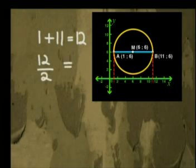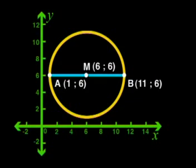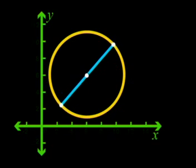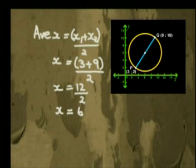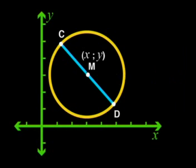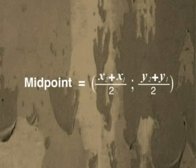Well done — I'm impressed that you are working so well with the formula. Before we get to our task, let's go over what we have done today. We started by looking at a diameter in a circle that was parallel to the x-axis, so we were able to read off the coordinates of the midpoint from the diagram. We then rotated the diameter and found that we needed another way to find the midpoint. We found that the midpoint could be found by taking the average of the x-values and the average of the y-values: x1 plus x2 all divided by 2, and y1 plus y2 all divided by 2.